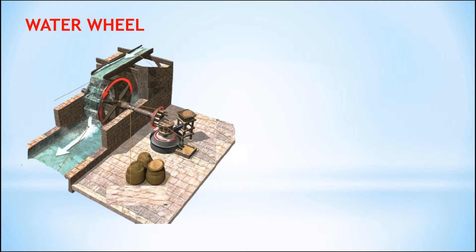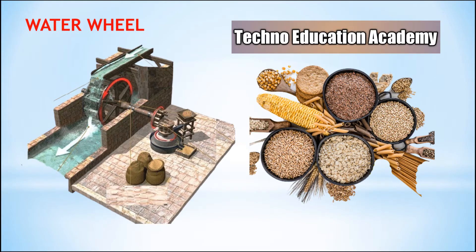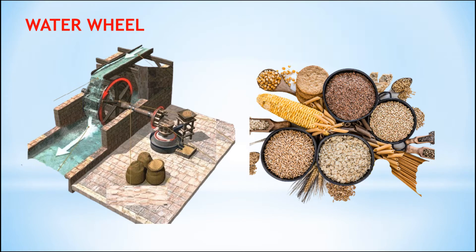Water wheels are useful for generating mechanical energy to grind grain, but they are not practical for generating electricity because the size of the water wheel is too large, it is too bulky, and it rotates too slowly. Hydroelectric plants are very different — they use turbine generators to produce electricity.